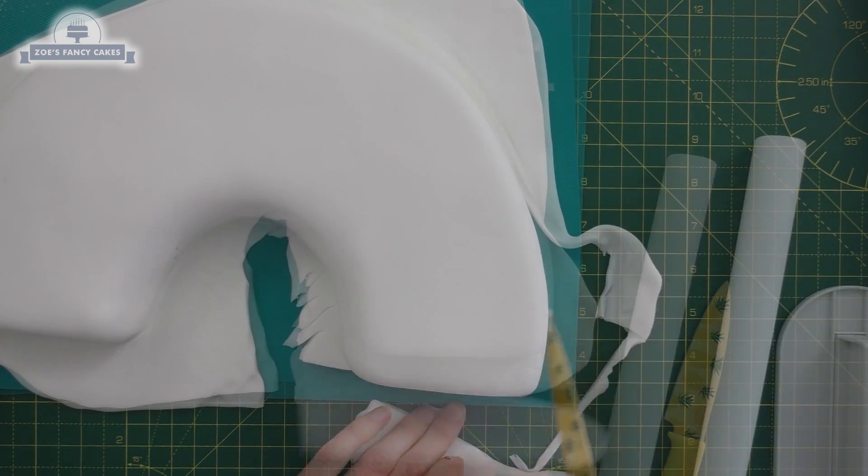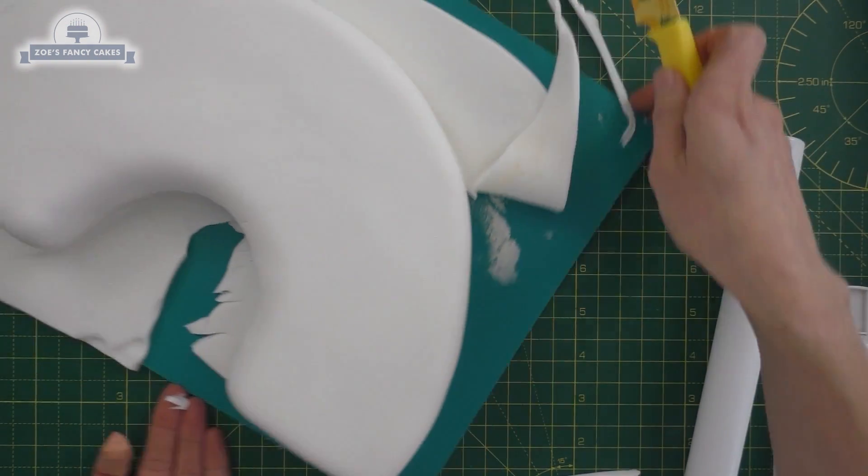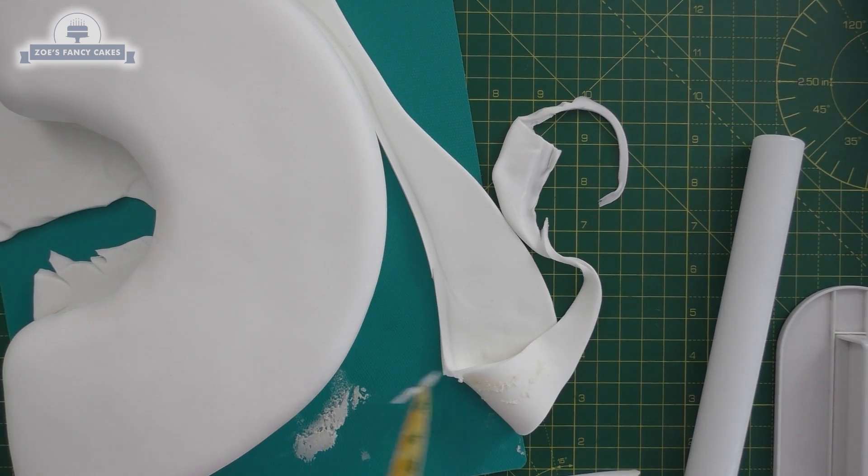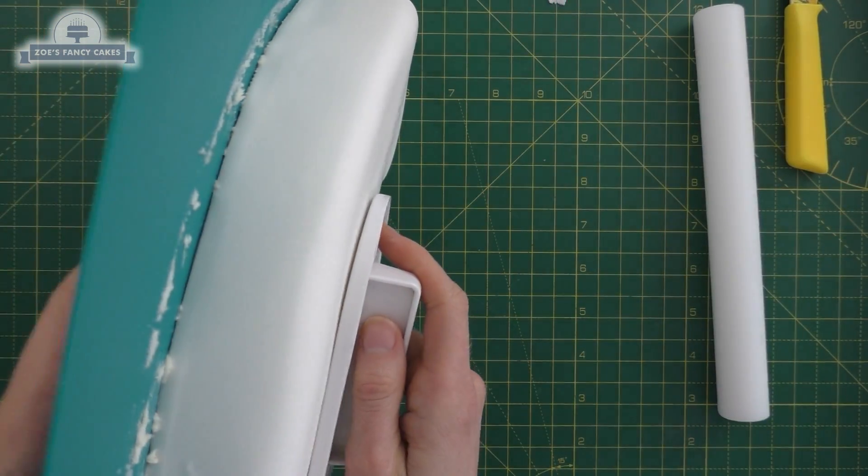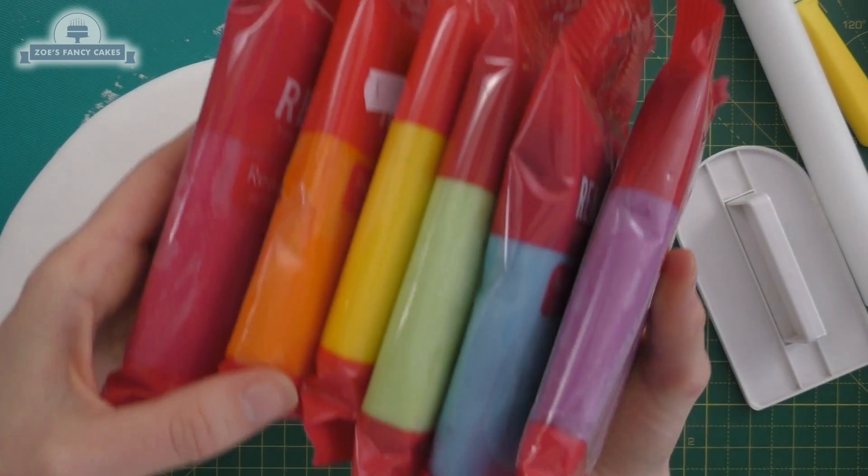I'm just going to cut it off all the way around the edge. The back of my rainbow is just cake card at the moment, so we will pick it up in a little bit and ice the back, but we're going to put the stripes on the front first. Let's just see if it stands up - yeah, so that's standing up on its own. We're going to use a variety of different colors for our rainbow.